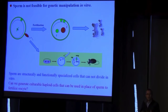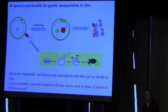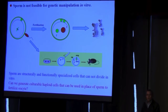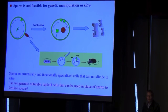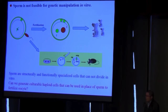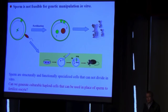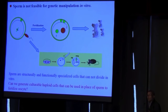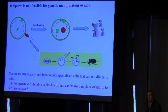So why artificial sperm? As all of you know, sperm can fertilize an oocyte to start a new life. Therefore, we can imagine if we can genetically manipulate sperm in vitro, we may produce gene-modified animals in one step. However, sperm are structurally specialized cells. These cells cannot be genetically manipulated in vitro.